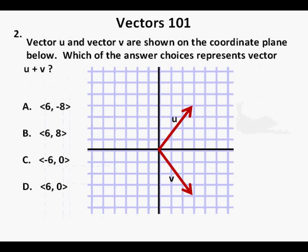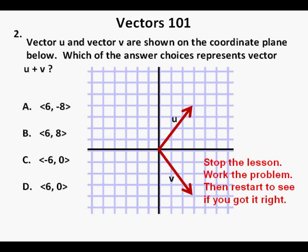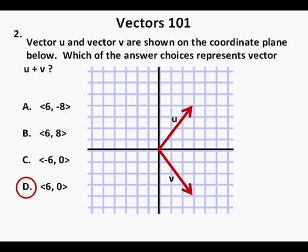Problem 2: Vector U and V are shown on a coordinate plane. Which of the answer choices represents vector U plus V? The correct answer is D, the vector ⟨6, 0⟩. If we place the vectors together tip to tail and add them, the transposed vector V in dashed form is placed at the end of vector U, and the end of vector U plus V is at the point ⟨6, 0⟩.